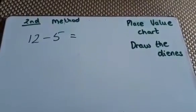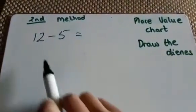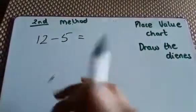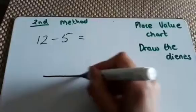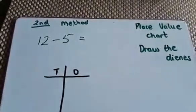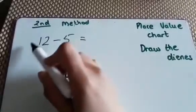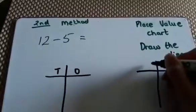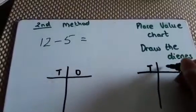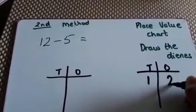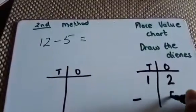Now this is the second method I'm going to show you of how to work out 12 minus 5 equals. I'm going to draw the place value chart of tens and ones. I'm going to rewrite this number sum again over here on this side, but again drawing the place value chart of tens and ones and write 12 minus 5.